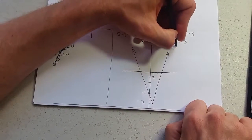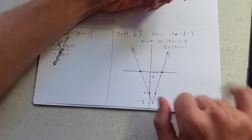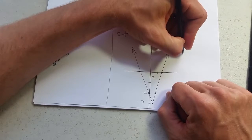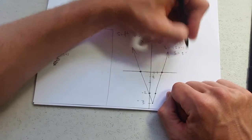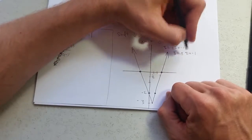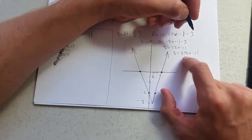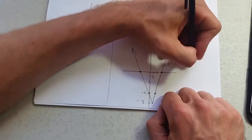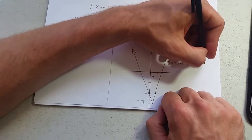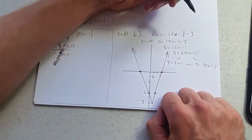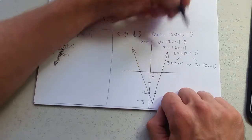3 equals absolute value 2x minus 1. There's the absolute value property. We saw that 3 equals plus or minus 2x minus 1. So there's two choices. 3 equals 2x minus 1, or 3 equals negative 2x minus 1. You get a plus or a minus. So don't forget about that.